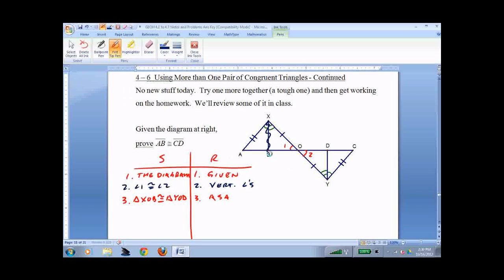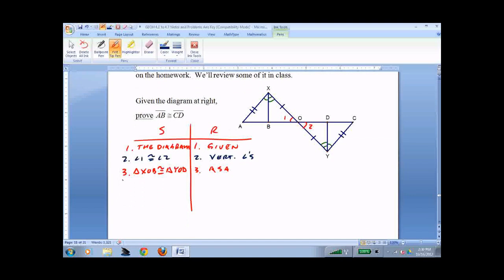I think I can pull off XB and YD now from CPCTC, and that should get me where I'm going. XB is congruent to YD. We just did a triangle congruence, so CPCTC is next. Now I've already got this, I've already got the angle, I've already got this, I've already got the angle. So I don't need to do anything else. It's already there. I can just jump straight to the triangle congruence.